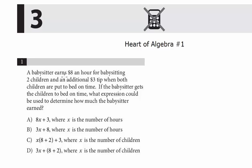Number one, a babysitter earns $8 an hour for babysitting two children and an additional $3 tip when both children are put to bed on time. If the babysitter gets the children to bed on time, what expression could be used to determine how much the babysitter earned. A really common question you'll see on the new test is linear equations set to real life scenario. So let's think about, we know slope intercept form, y equals mx plus b. But think about it, we have really two types of variables here.